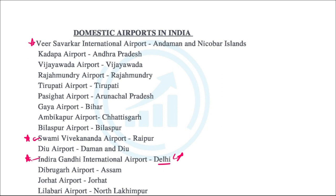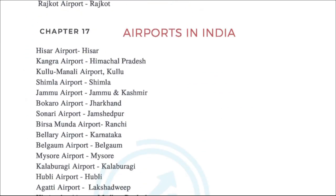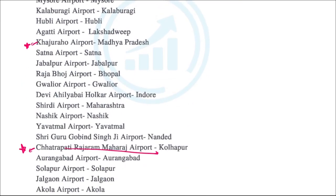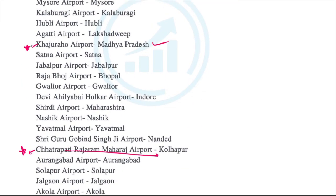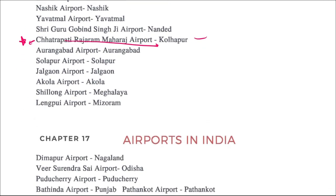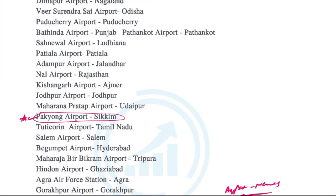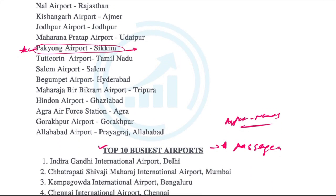Andaman and Nicobar Island Airport is Veer Savarkar International Airport. Swami Vivekananda Airport is in Raipur. Khajuraho Airport is in Madhya Pradesh. Kolhapur Airport is Chhatrapati Rajaram Maharaj Airport. Pakyong Airport was recently inaugurated by Prime Minister Modi — you should remember this one.